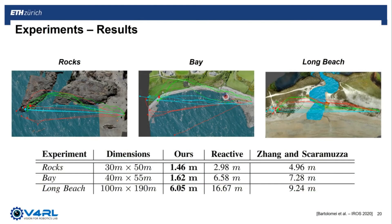We repeat all the above experiments four times. In the summarizing table, the model dimensions and the average missed distances from the goal positions are reported. Our perception-aware planning strategy using semantics outperforms both the reactive planning strategy and the perception-aware planner by Zhang and Scaramuzza. It is noticeable how the reactive planner outperforms Zhang and Scaramuzza in the Rocks and Bay experiments, because this perception-aware planner is not able to distinguish reliable from unreliable landmarks, forcing longer navigation on top of moving water and causing larger drift.